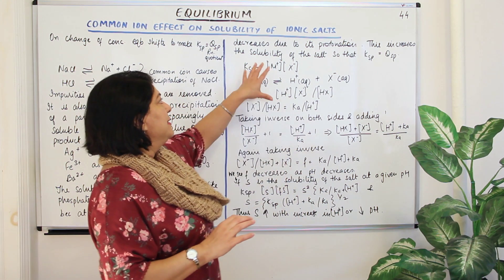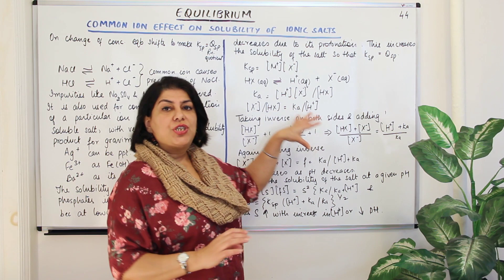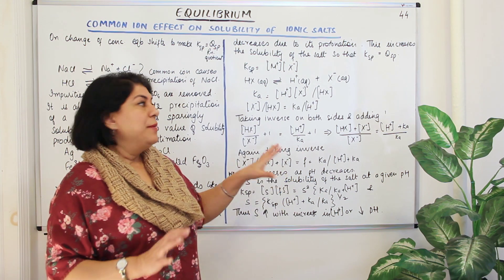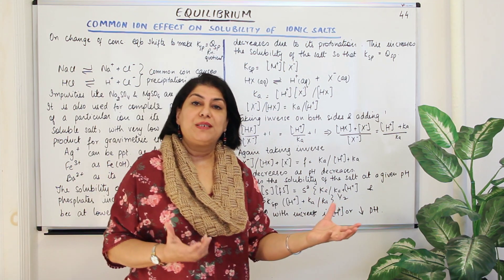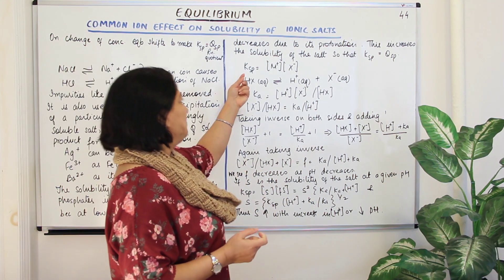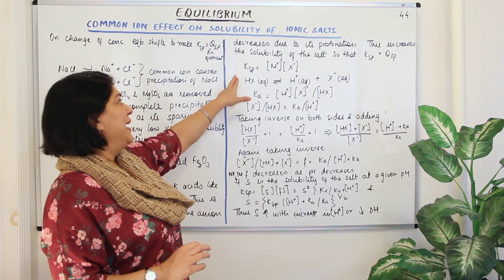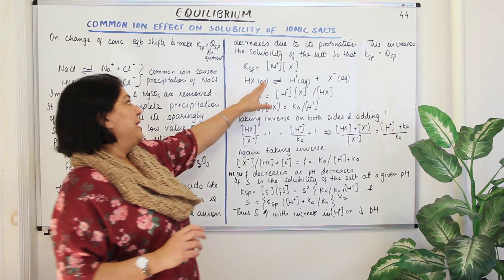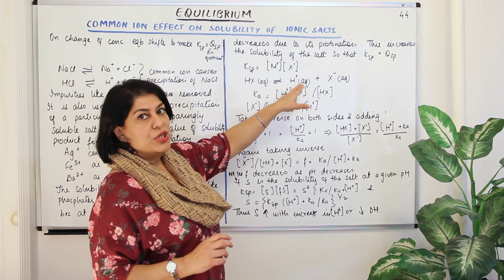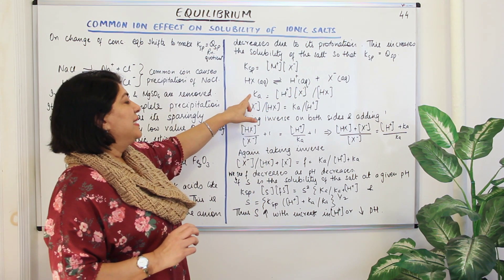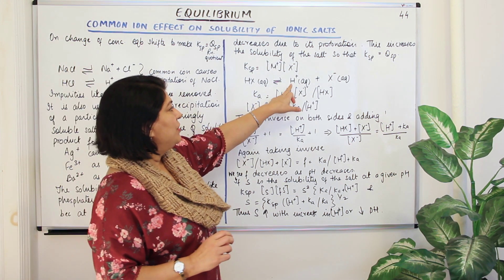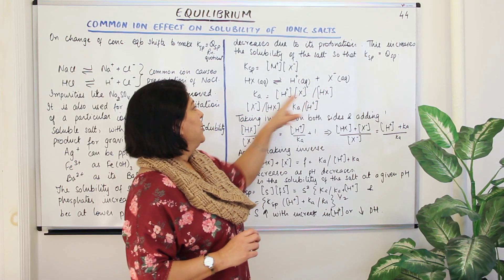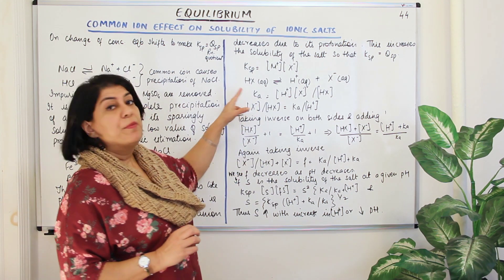In order to explain this, a mathematical derivation has been done — just for explanatory purposes, as numerical problems based on this are rarely seen. For a sparingly soluble salt, Ksp is the product of the concentrations of the cation and anion. The acidic solution is provided by an acid HX which dissociates into H⁺ and X⁻. The equilibrium constant Ka equals the concentration of H⁺ times the concentration of X⁻ divided by the concentration of HX.